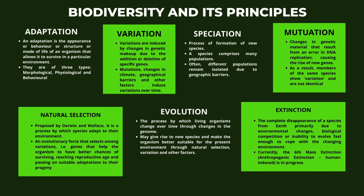Third comes speciation, which is the process of formation of new species. A species comprises many populations, and often different populations remain isolated due to geographic barriers. Next comes mutation, where changes in genetic material result from an error in DNA replication, causing the rise of new genes. As a result, members of the same species show variation and are not identical. This is followed by natural selection, proposed by Darwin and Wallace, which is a process by which species adapt to their environment — an evolutionary force that selects among variations, favoring genes that help the organism survive, reach reproductive age, and pass on suitable adaptations to their progeny.